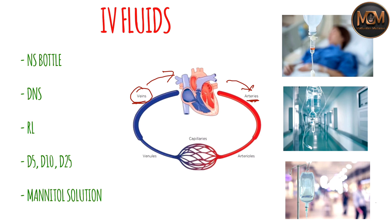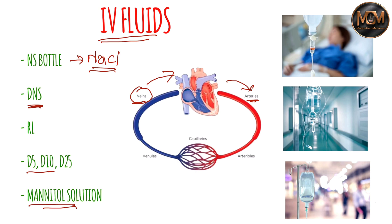IV fluid is nothing but an intravenous fluid — we put it into the veins, that is why it is called intravenous fluid. We have five types of IV fluids. The first one is NS bottle, or normal saline, which contains NaCl — sodium chloride. The second one is DNS, which stands for dextrose normal saline. The third is RL, or Ringer's Lactate solution. The fourth is D5, D10, and D25, which are dextrose solutions. The last one is mannitol. We will discuss each one's composition, uses, and dosage.